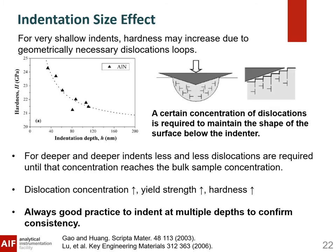You also have to consider you may not be indenting deep enough. For very shallow indents, you may get a higher measured hardness value due to a higher concentration of geometrically necessary dislocation loops — as dislocation concentration goes up, yield strength and measured hardness go up. As shown in this example, the measured hardness of an aluminum nitride film is higher at the surface and gets lower as indentation depth increases. It's always good practice to indent at multiple depths to confirm consistency.